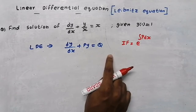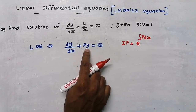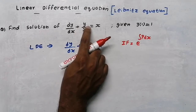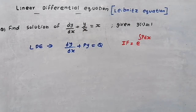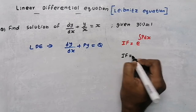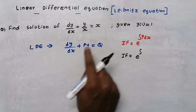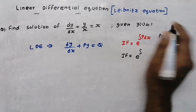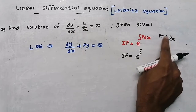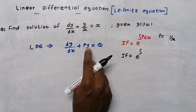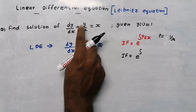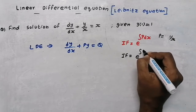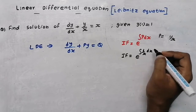In our equation, the coefficient near the dependent variable y is 1/x. Therefore P = 1/x. So the integrating factor equals e raised to the integral of (1/x) dx.